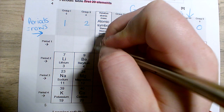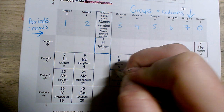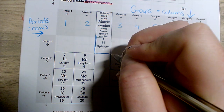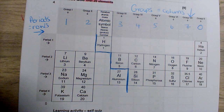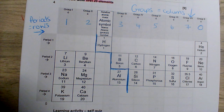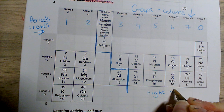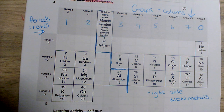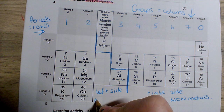Draw a line — almost like steps — from hydrogen to boron. This line represents the separation between the metals and the non-metals of the periodic table. On the right side we have the non-metals and on the left side we have the metals.